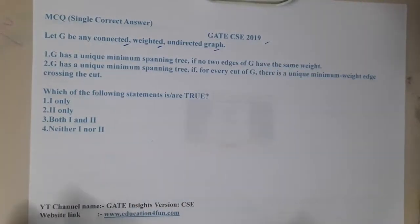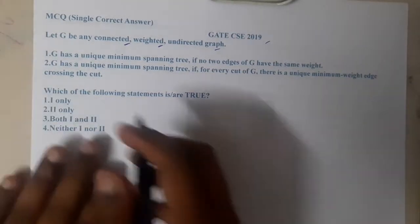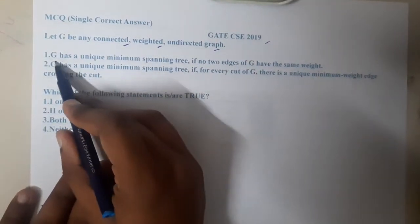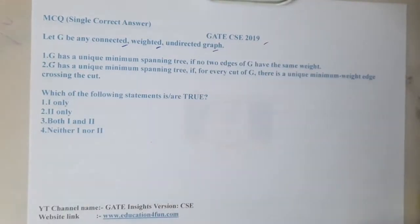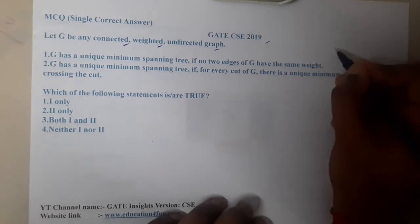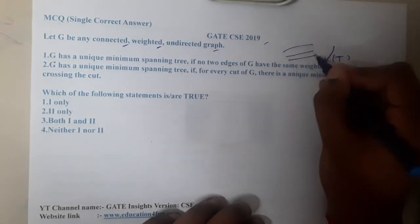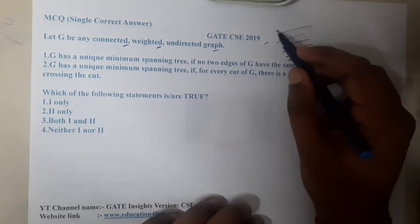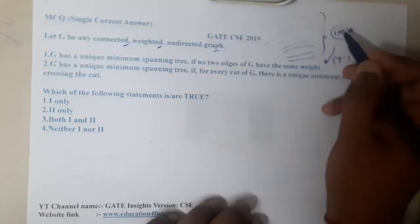Option A says that G has a unique minimum spanning tree if no two edges of G have the same weight. If you recall, I told this statement multiple times in this PYQ series — this is always true. If all edges have unique weights, you can clearly say that you are always going to end up at a single MST. That's a really important point you should remember.